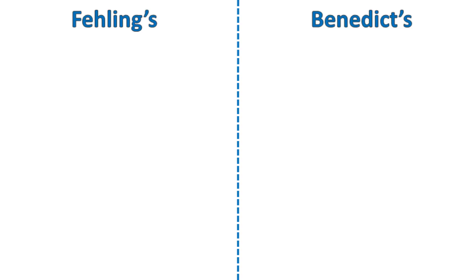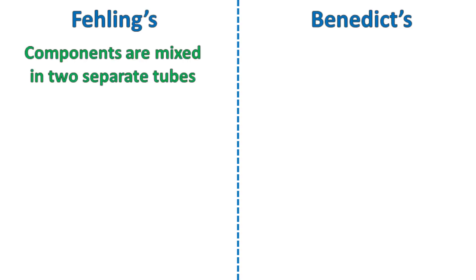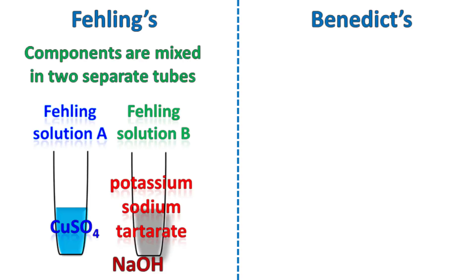The Fehling's test uses two solutions: Fehling A and Fehling B. Fehling A is a solution of copper sulfate, while Fehling B is a solution of potassium-sodium tartrate along with an alkali like NaOH. Both Fehling A and Fehling B must be mixed together before carrying out the reaction.